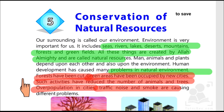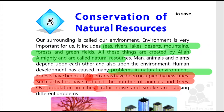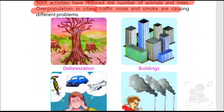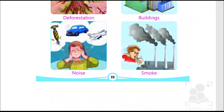Forests have been cut so drastically, green areas have been occupied by new cities, so we don't find much forest and green areas anymore. That's why we face so many problems, and the wildlife is also getting reduced. Overpopulation in cities, traffic noise, and smoke have all caused so many problems.